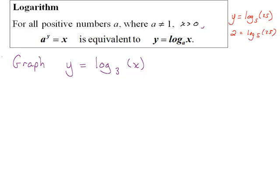We can also rewrite this in exponential form. The base of the logarithm is a, so I have 5 to the y equals 25, and then I solve for what y has to be. This is like a type 1 exponential equation where if I can write the other side with the same base, I can just set the exponents equal to each other to solve.